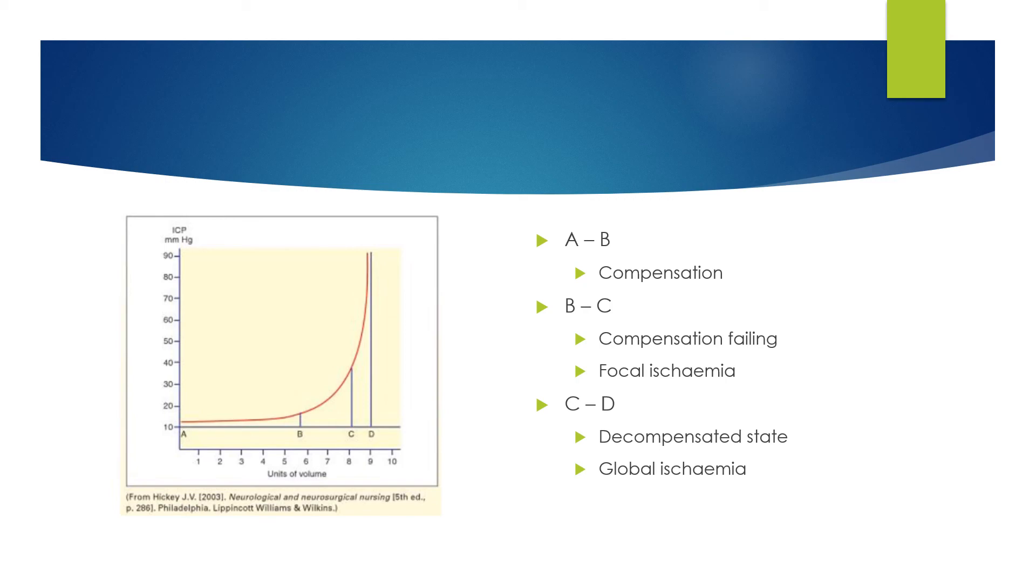Between C and D, we see a completely decompensated state where that situation within the head is getting so bad that there is now global ischemia affecting the whole brain.